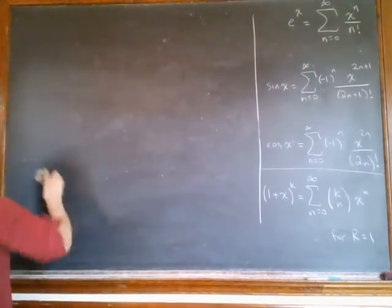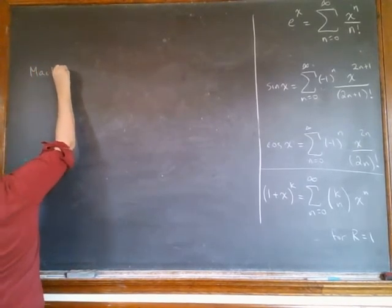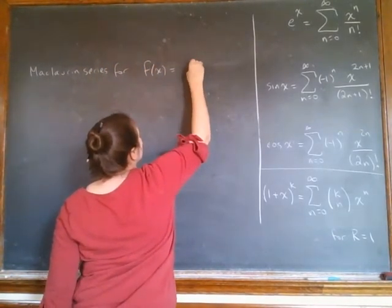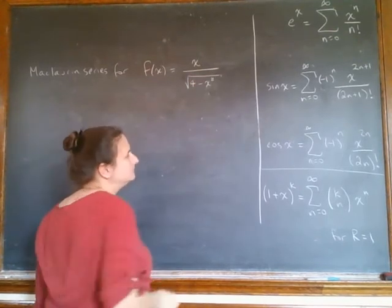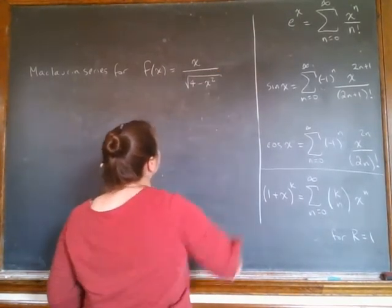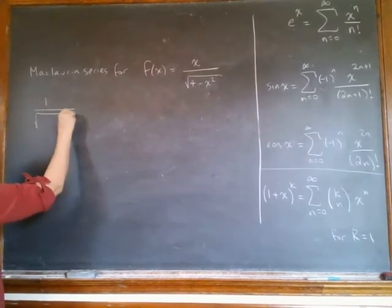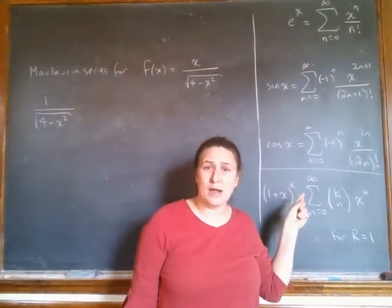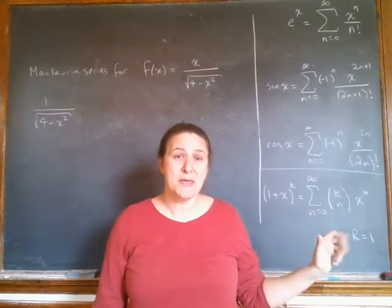So if I just want to use this formula simply the way it is, to do the expansion of something, let me show you an example of where we would do that. Let's say we are going to do the Maclaurin series for f of x equals x over square root of 4 minus x squared. So this doesn't look great, but I'm just going to ignore the x.